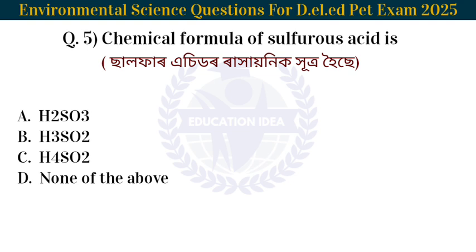Next question: The chemical formula of sulfuric acid is. Rachani hoot koro. The answer is H2SO4. Sulfuric acid's chemical formula is H2SO4.